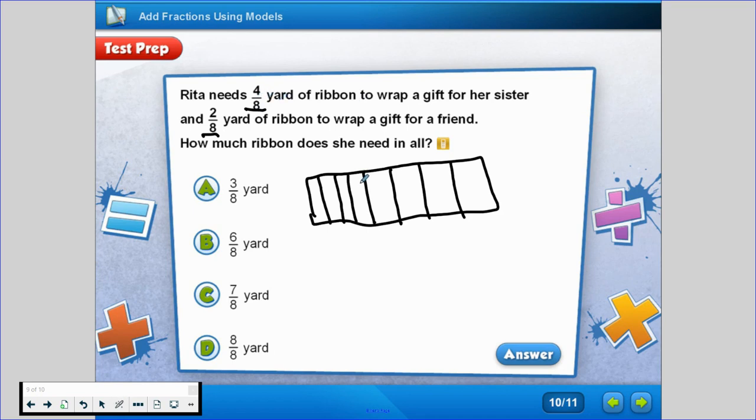She used 4/8 of a yard for her sister. So 1, 2, 3, 4, and she used another 2 yards for her friend: 1, 2. Now I'll simply count up how much is shaded in all: 1, 2, 3, 4, 5, 6. 6/8.